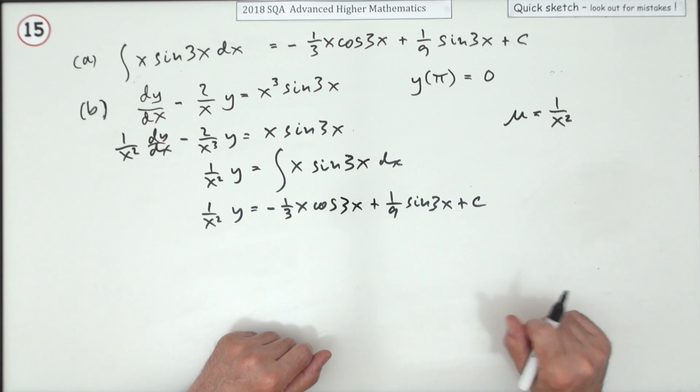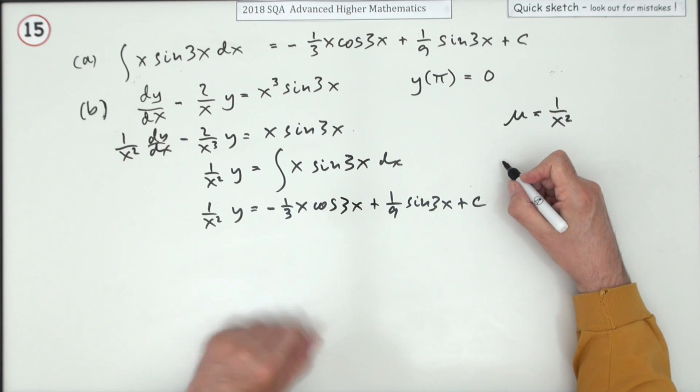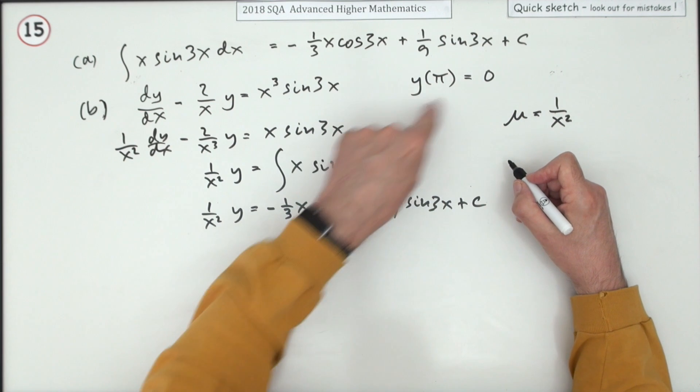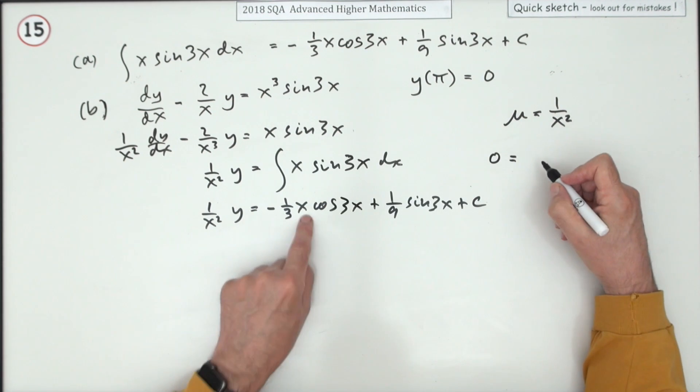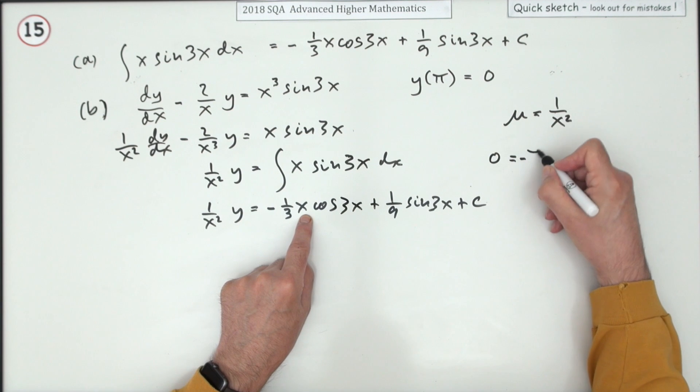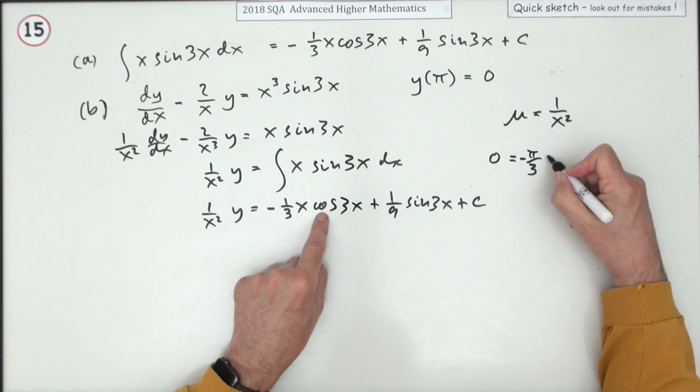I'd rather find it separately at the side. So I'll pop it up here then. Y is zero, so that first term is just zero when x is π. So that's negative π upon 3, and that'll be cos 3π.